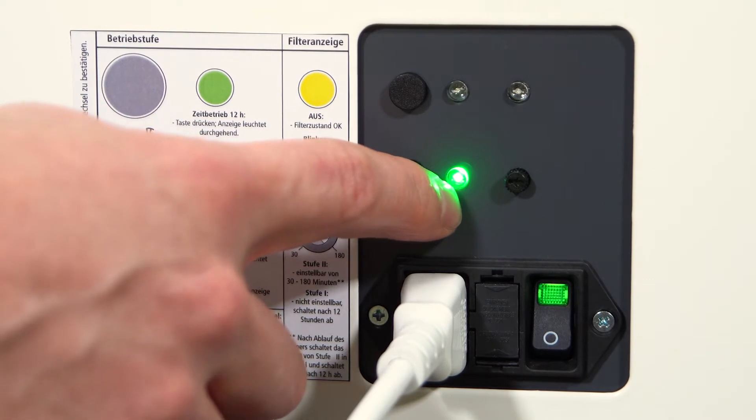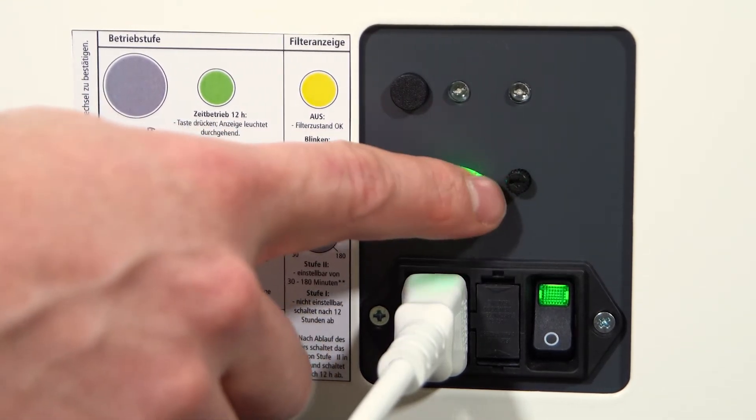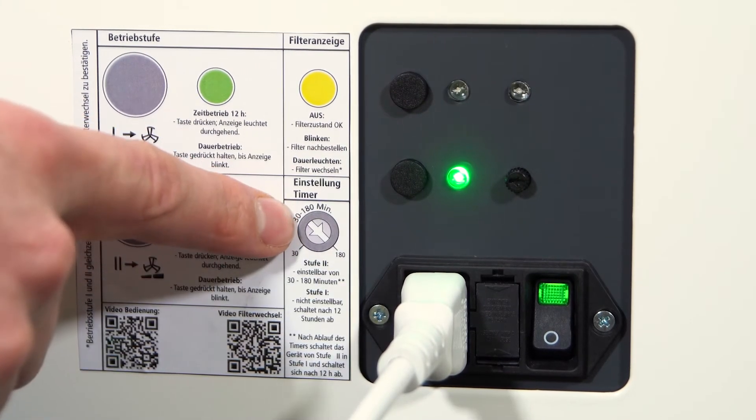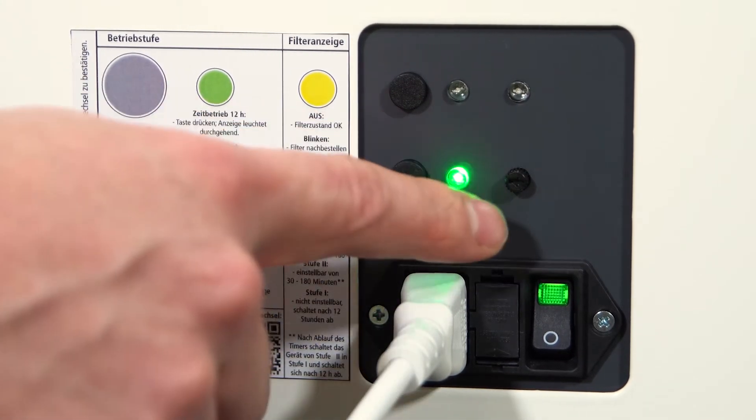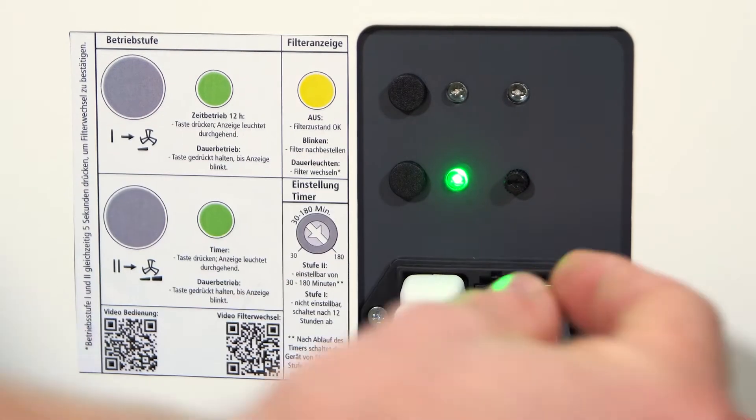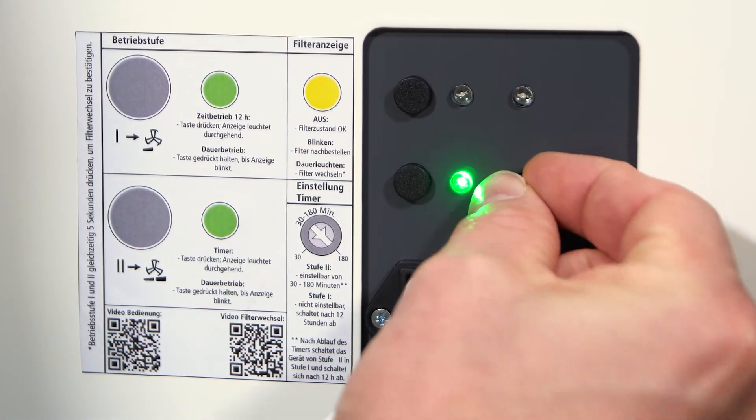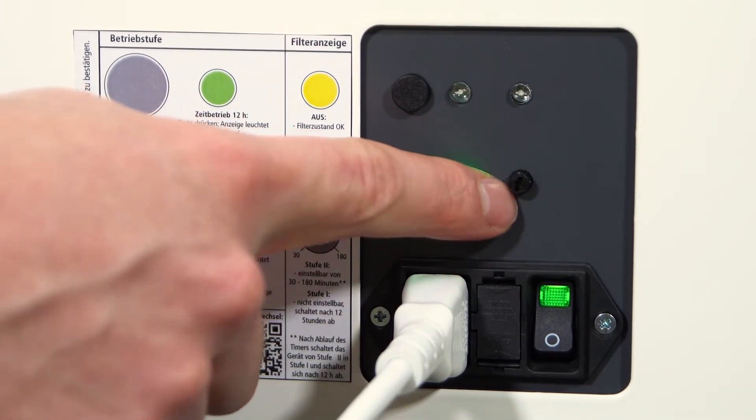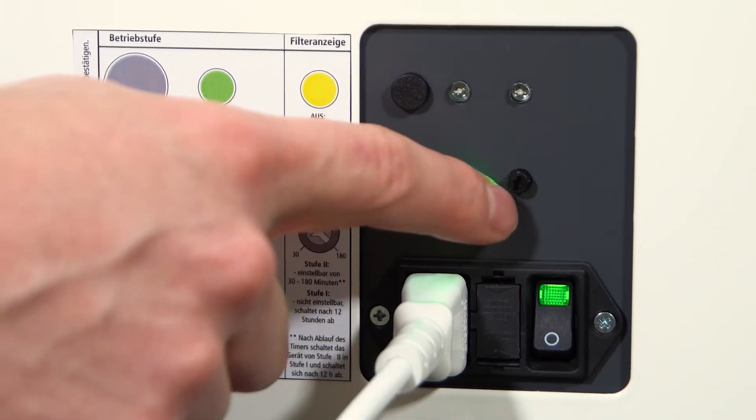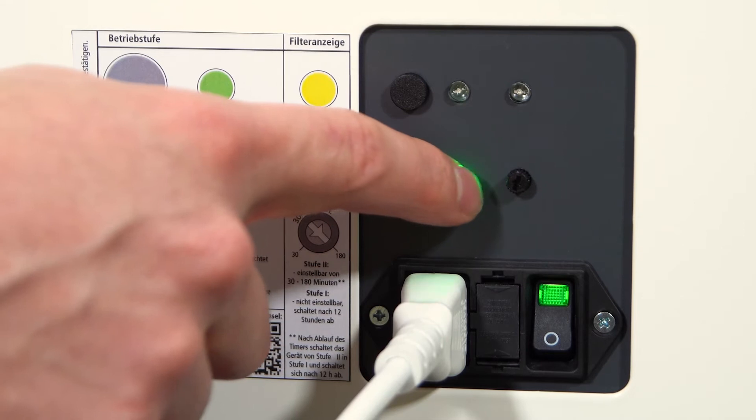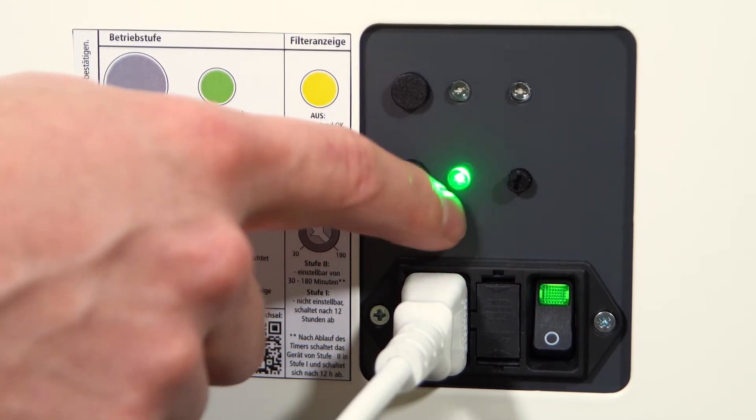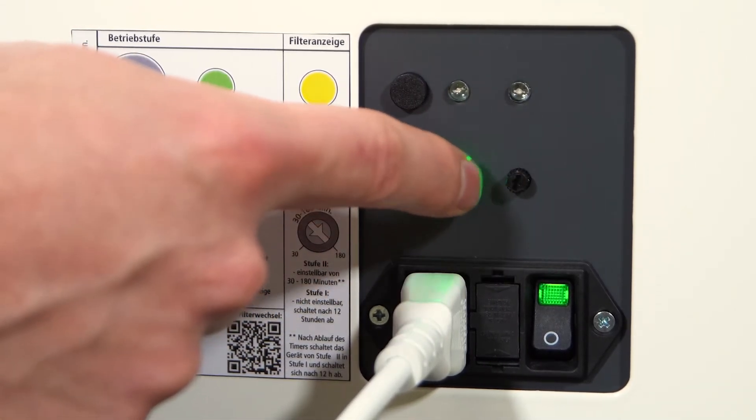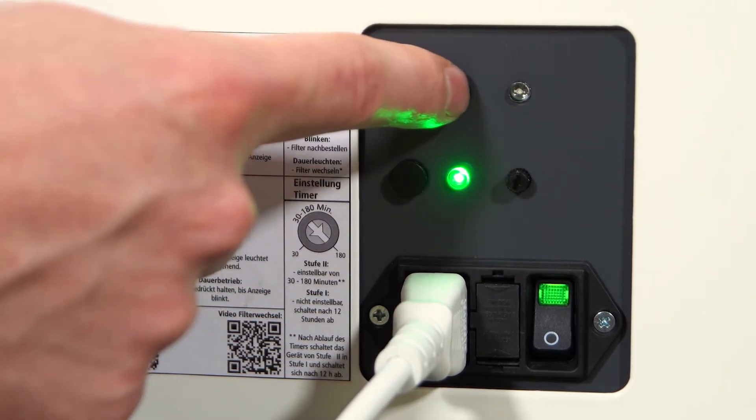At operating level 2, indicated by its continuously glowing green LED, the air purifier is in an adjustable timer mode. After 30 to 180 minutes have elapsed, depending on how the rotary timer switch is set—in this example it is set to 30 minutes—the operating level switches back to operating level 1. I will do this once manually now.